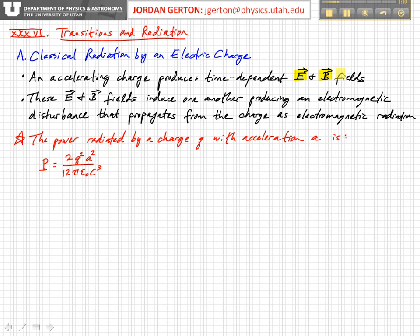You can calculate the power radiated by a charge using classical mechanics. If the charge Q is accelerating with an acceleration A, then the power radiated is given by this expression here. It's equal to 2 times the charge squared times the acceleration squared divided by a constant, 12 pi epsilon naught.